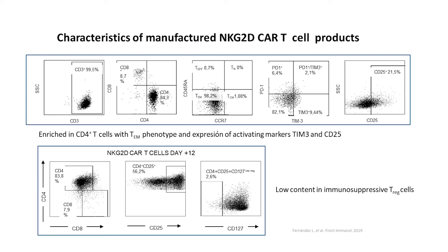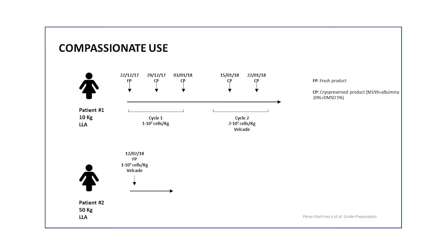Regarding some issues and warnings about these effector cells — for example, whether the CAR T cells after expansion express checkpoint inhibitors such as PD-1 — as you can see in the slide, we do not observe high expression of PD-1. Also, because most of the cells in the memory T cell population are CD4, we do not observe a T-regulatory phenotype in our memory T cells. For these reasons, under compassionate use, we infused these cells in two children with refractory ALL who were not candidates for any clinical trial at that time.